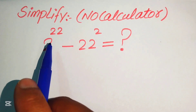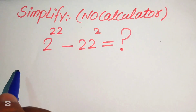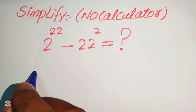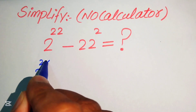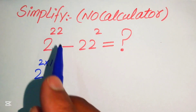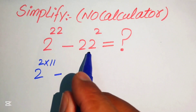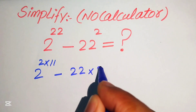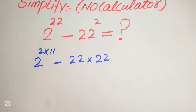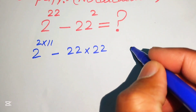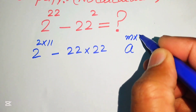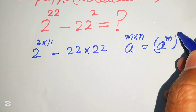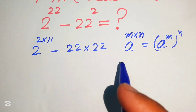The very first step is to focus on 2 to the power of 22 and rewrite it as 2 raised to the power of 2 times 11, since 2 times 11 equals 22. Then 22 squared is written as 22 multiplied by 22. After this step, we apply the exponent law: a to the power of m×n equals a to the power of m, to the power of n.